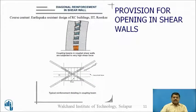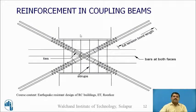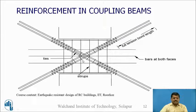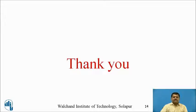The fifth measure is the provision for openings in shear walls, such as windows. Coupling beams are provided at these openings, and a specific reinforcement arrangement is required at the opening corners. This includes horizontal bars, inclined diagonal bars with ties, and vertical ties at the coupling beams. These reinforcement details must be provided at all shear wall openings. Thank you.